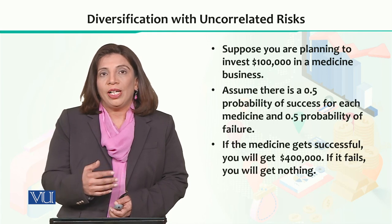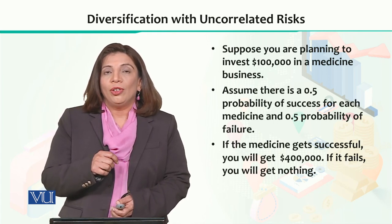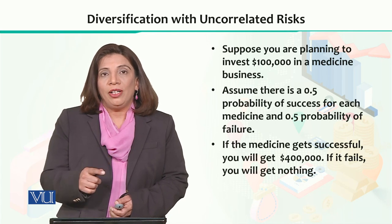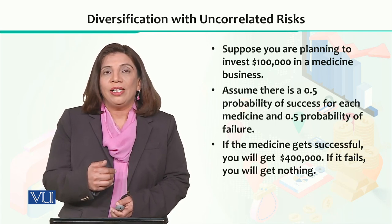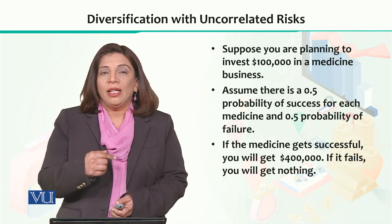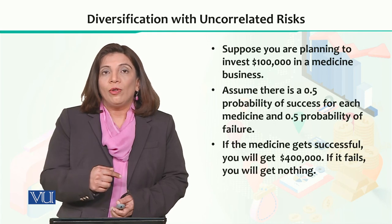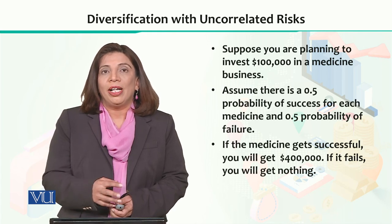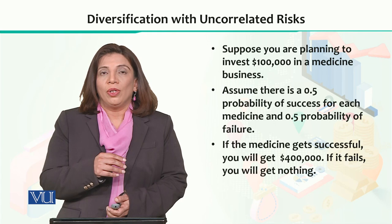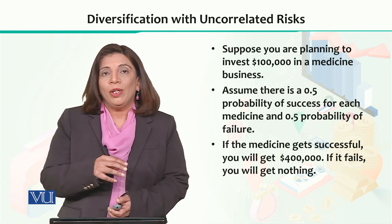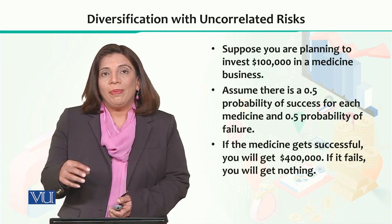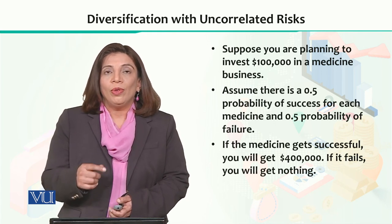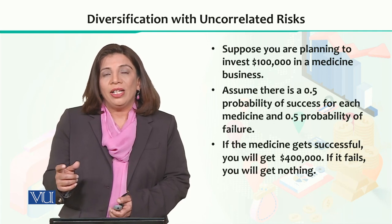By investing your money in two different product categories or two different types of investments, you expose yourself to uncorrelated risks. Uncorrelated means that if in any kind of product market or sector there are some problems — a shortage of supply, some type of disease, or issues with raw material availability — and you have a loss in that investment, then a completely uncorrelated product will not experience the same loss. That is altogether a different area, and the risks and the risk factors are different.